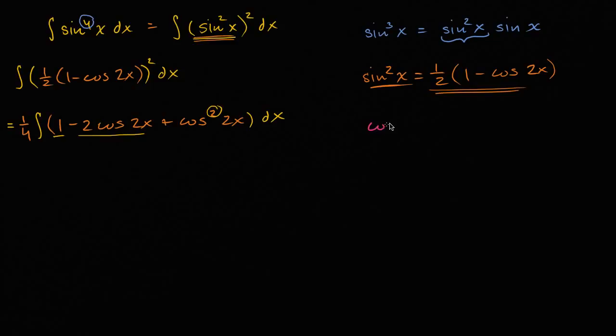We know that cosine squared of two x is going to be equal to one half times one plus cosine of double this angle, so cosine of four x. So once again, just make the substitution. This is going to be equal to one fourth times one minus two cosine two x, plus one half, plus one half cosine of four x dx.